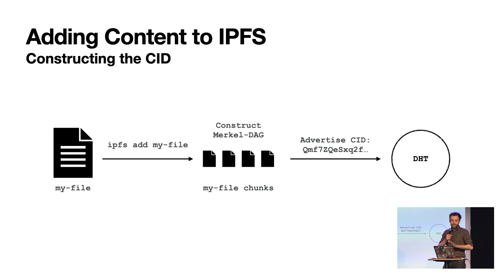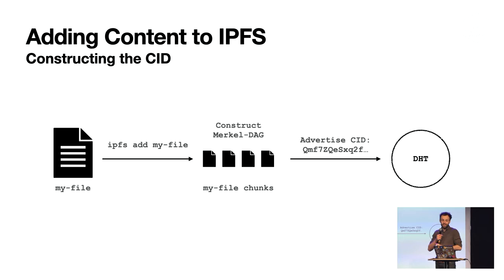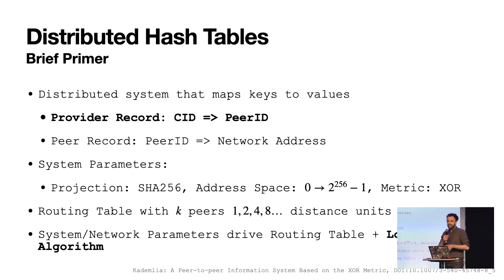Let's start at the beginning. Imagine you have a file called 'my file' and you go to the command line and type 'IPFS add my file.' IPFS would chunk the file into different chunks, construct a Merkle DAG, calculate a CID, and then IPFS starts advertising the CID to the DHT. To understand how IPFS does this, we need a brief primer on distributed hash tables.